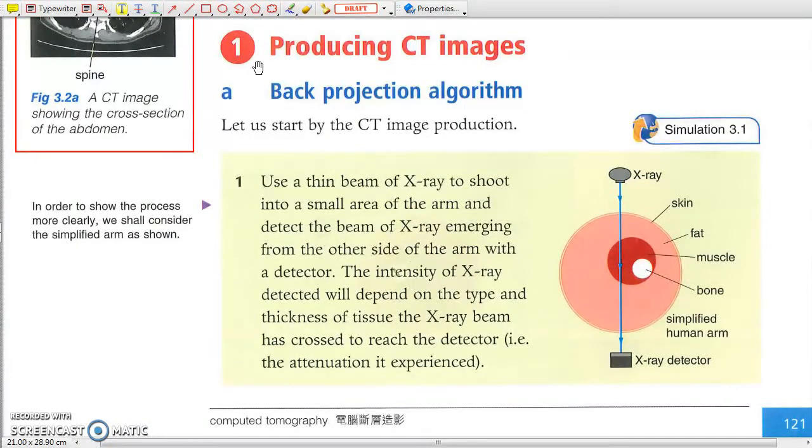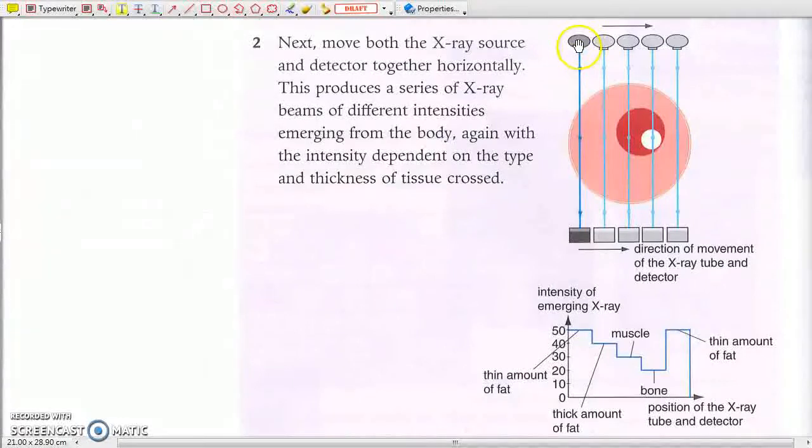Producing CT images. Back projection algorithm. First, recall that when X-rays pass through different tissues, the attenuation depends on the type as well as the thickness of the tissue. When the X-ray beam is moved across a certain tissue structure in the X direction, the transmitted intensity varies along this particular direction of movement.